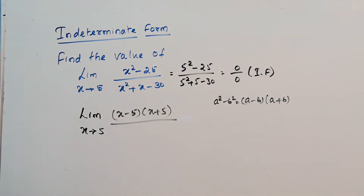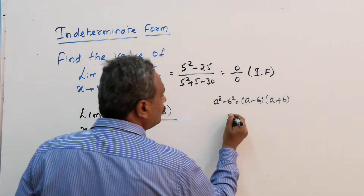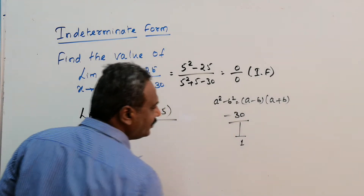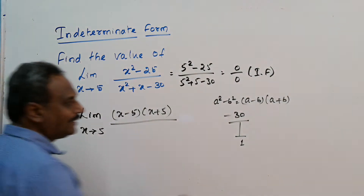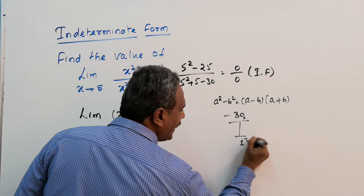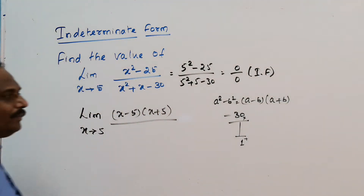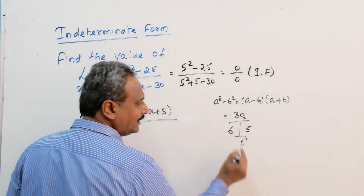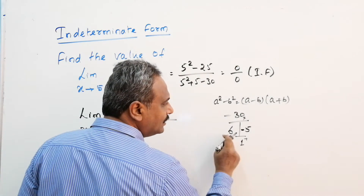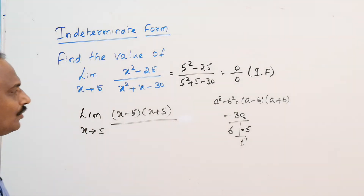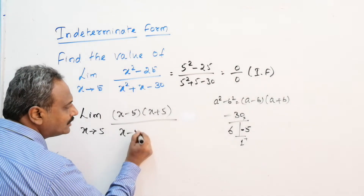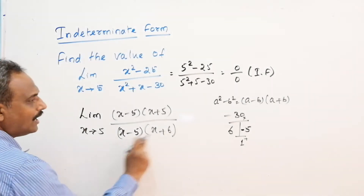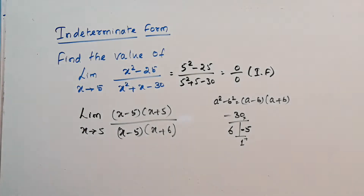For the denominator, we have a quadratic equation with minus 30. We need two factors such that when multiplied we get minus 30 and when added we get 1. Since 6 multiplied by minus 5 is minus 30 and minus 5 plus 6 is 1, the factors are (x minus 5)(x plus 6).